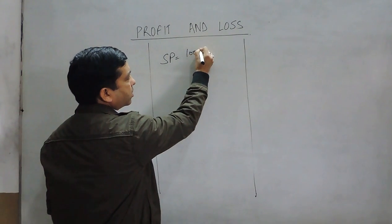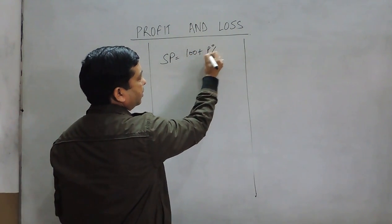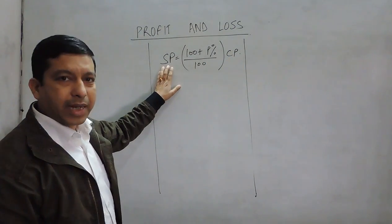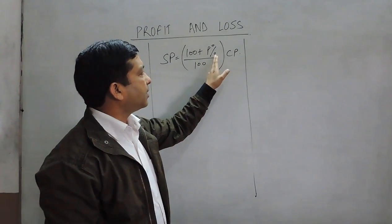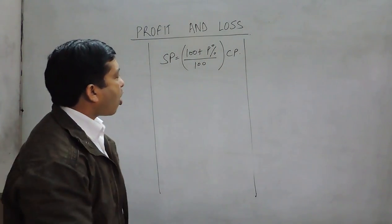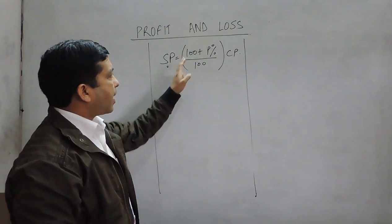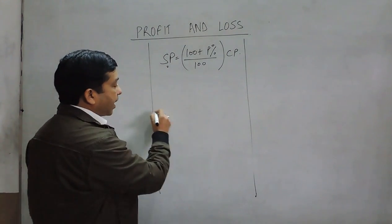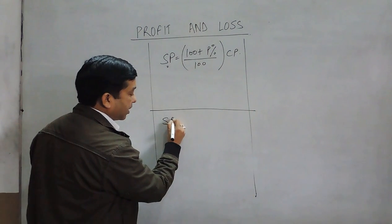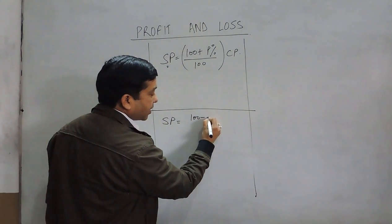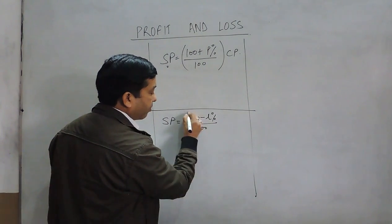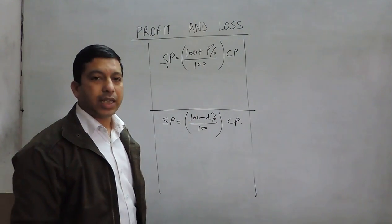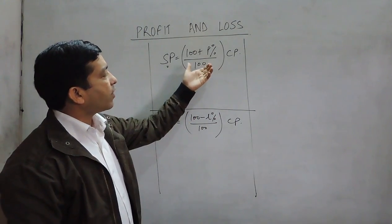The first formula given in our books is: SP = (100 + P%) / 100 × CP, where SP is the selling price, P% means profit percent, and CP is the cost price. There is another formula: SP = (100 − L%) / 100 × CP. These are the two formulas which people generally learn, but instead of learning the formula, we should understand what they mean.